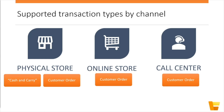Within a physical store, you can do cash and carry transactions or customer orders. A customer order might involve a customer walking into a store, finding something they like but not finding their size, so a store associate locates that product in another store and creates a customer order — taking payment and creating an order for the goods to be shipped or picked up at another store. Online store is primarily a customer order scenario, and call centers are also primarily customer orders.